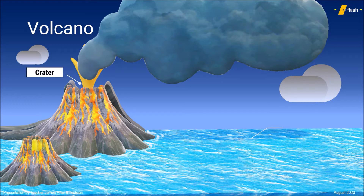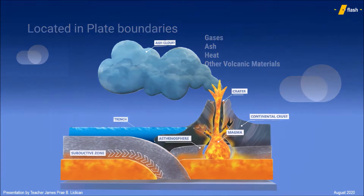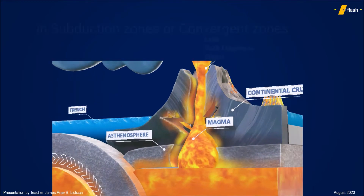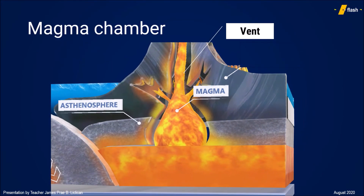Volcanoes are elevated landforms generally with an opening in the summit called the crater, where lava, rock fragments, steam, gases, ash, heat, and other volcanic materials are ejected out onto the surface of the earth. There are many parts of volcanoes, but generally volcanoes vary in the degree of slope, where the flank could be a predictor as to how viscous the magma is inside.